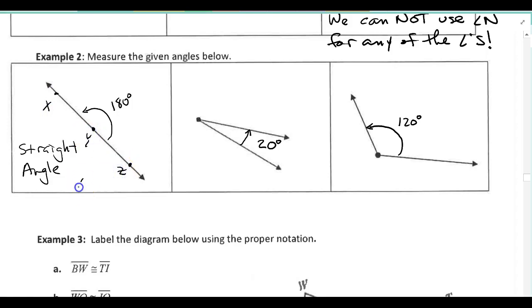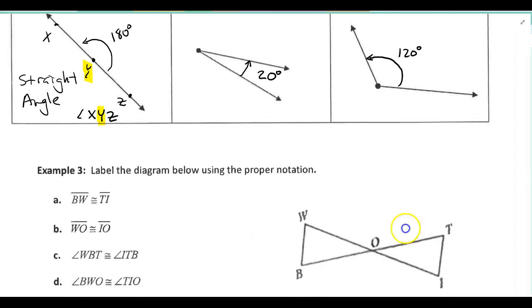And we could call this now angle XYZ. Remember, the vertex is always the middle letter that we name. And then we had 20 degrees over here and 120 degrees over there. Again, if you have any questions about how to use your protractor, make sure that you ask.